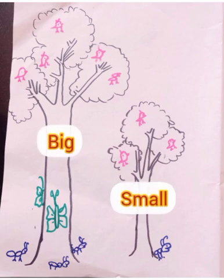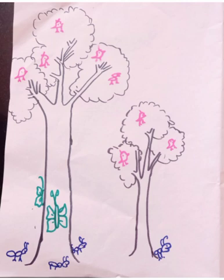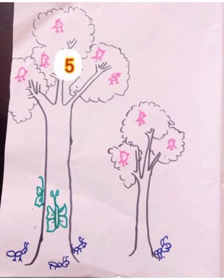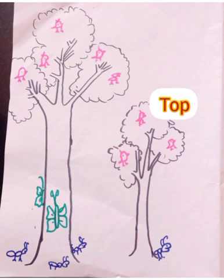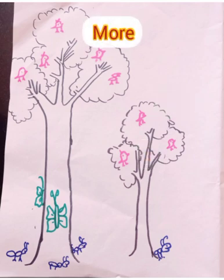Here is a picture with a big tree and a small tree. First, look at the big tree — on the top of the tree we see five birds. Then look at the small tree — on the top we see three birds. We know five is more and three is less. Again, look at the big tree — we see three ants at the bottom. Look at the small tree — there is only one ant at the bottom. Here, we know three is more and one is less.